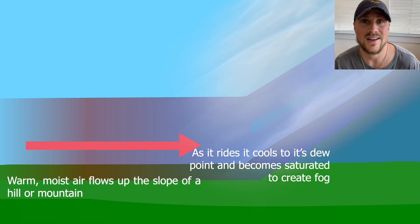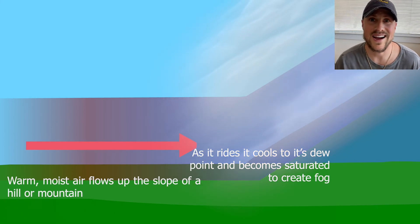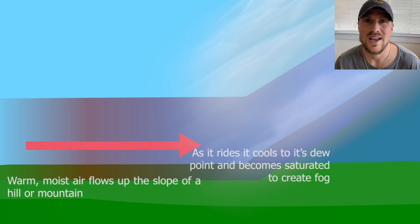As the warmer moist air is pushed upslope by winds into the higher atmosphere of the hill or mountain, it cools and the water vapor within it condenses to form fog.